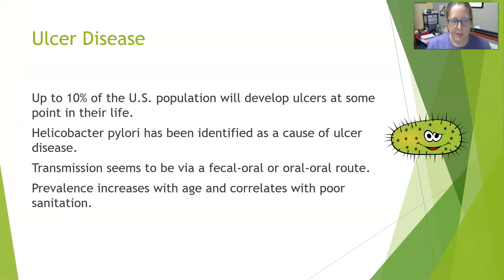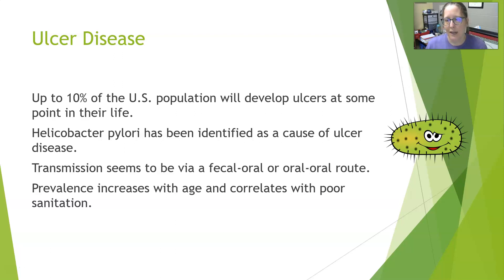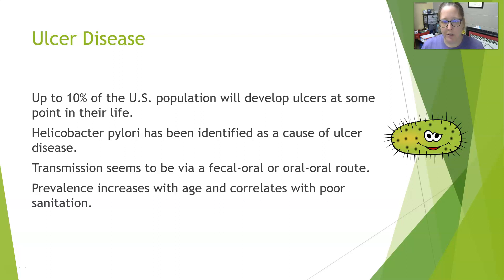First let's talk about ulcer disease, or peptic ulcer disease. Up to 10% of the U.S. population will develop ulcers at some point in their life. Helicobacter pylori has been identified as really the cause of ulcer disease. This is a bacteria that can survive the acidity of the stomach, settle in the stomach, and cause ulcers to develop. The transmission of this bacteria seems to be either via fecal-oral or oral-oral routes, and the prevalence does increase with age and correlates with poor sanitation.